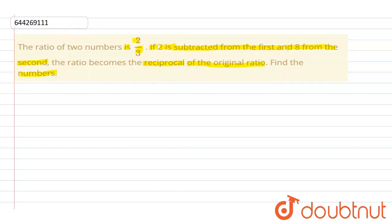Let us consider that the numbers are x and y. Now it is given that ratio of 2 numbers is 2 by 3, therefore x by y is equal to 2 by 3. Simplifying this will get us 3x minus 2y is equal to 0. Let us say this is our equation first.